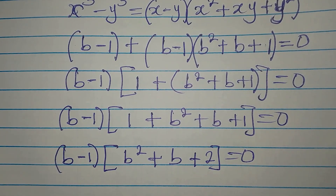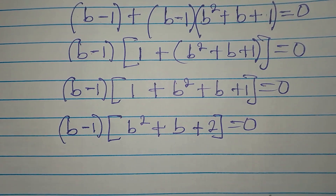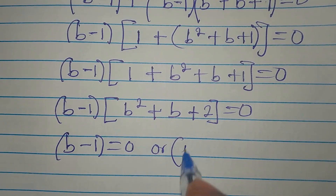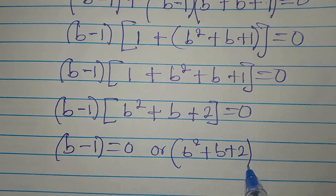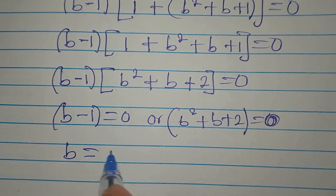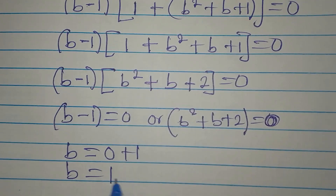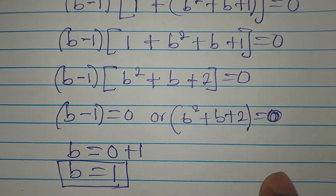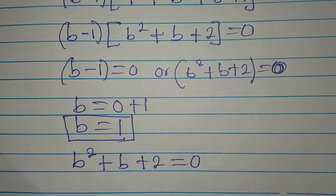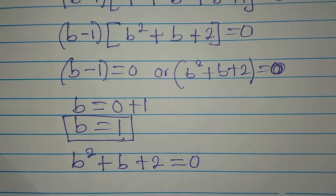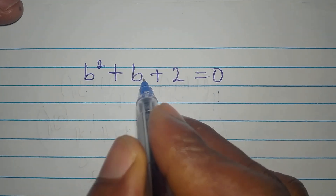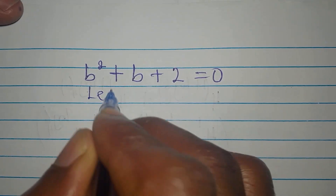Since we multiply these two factors to get 0, one of them must be 0. So either b minus 1 equals 0, giving b equals 1, or b squared plus b plus 2 equals 0. For the quadratic b squared plus b plus 2 equals 0, we will use the quadratic formula. To avoid confusion with the b in the formula, let me substitute b with x.